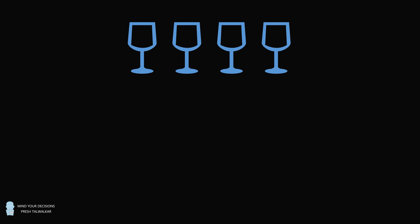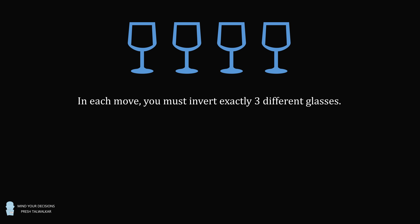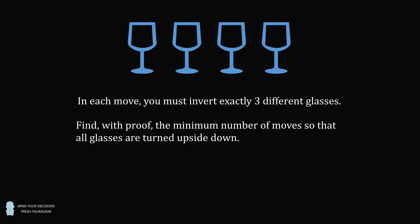Hey, this is Presh Toewalker. Here's a fun little logical puzzle. You start with four empty glasses that are right side up. In each move, you must invert exactly three different glasses. Invert means that if a glass is facing the right way up, you have to turn it upside down, and if the glass is upside down, you have to turn it right side up. Find with proof the minimum number of moves so that all the glasses are turned upside down.